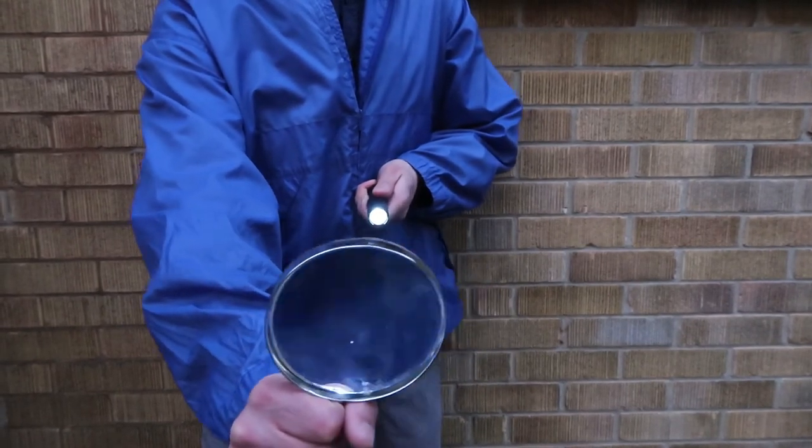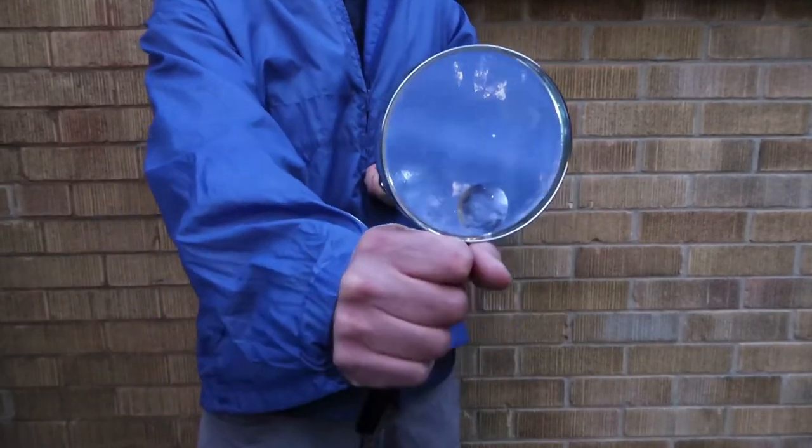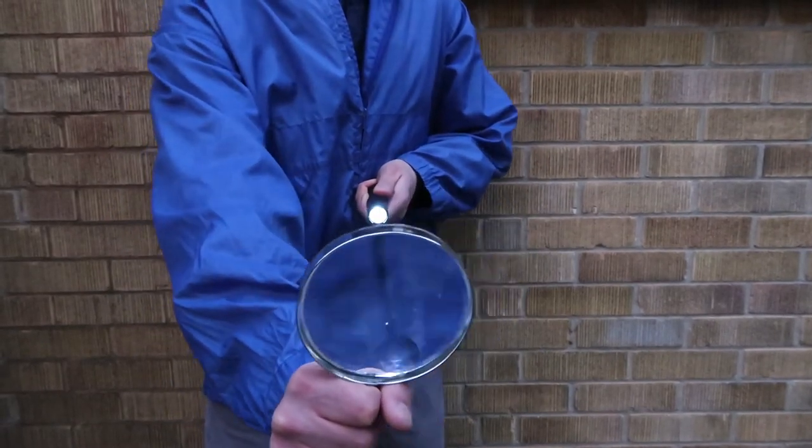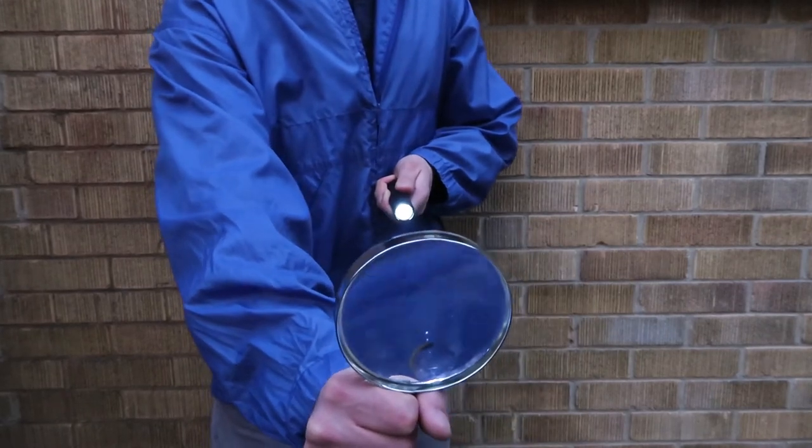Once you have a focused beam, then you just hold your arms steady and pivot yourself up and down and sideways. You can readjust and focus as you need to, and that way you can have a spotlight with just a little flashlight.